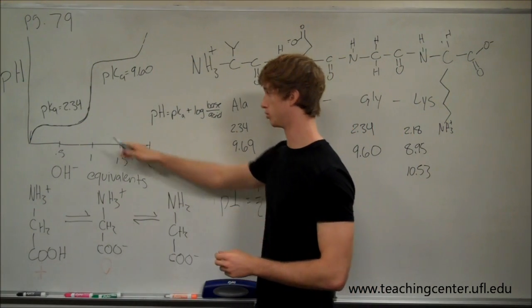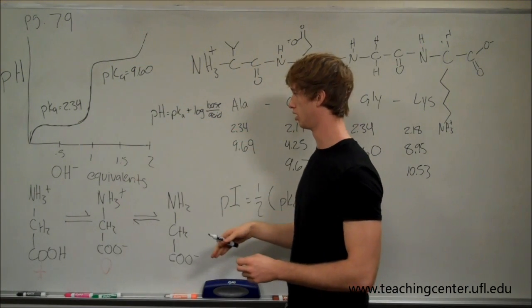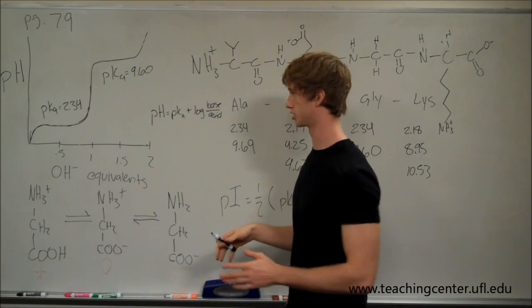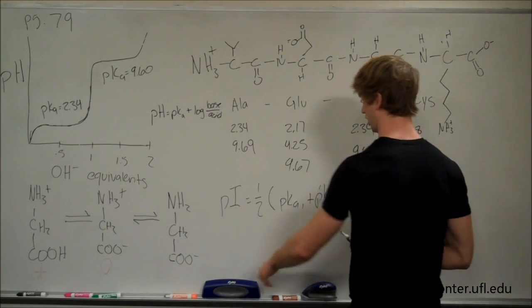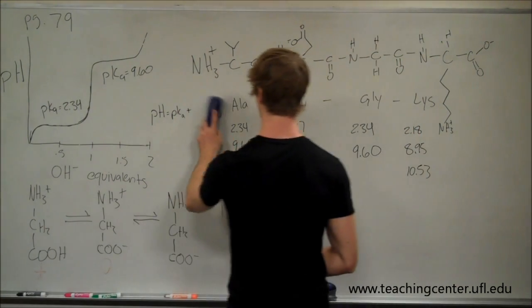Basically, we take 2.34 plus 9.6 divided by 2, that gives us like about 6, 5.97 I think. So this is our new equation, this is what we're dealing with.